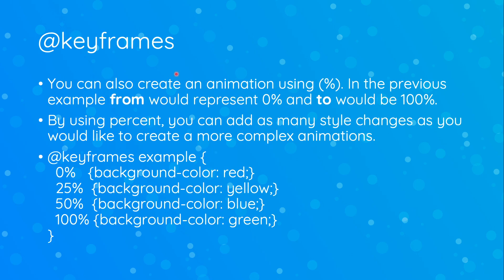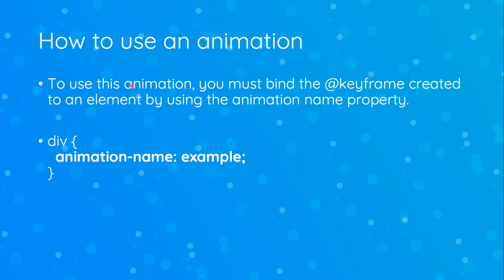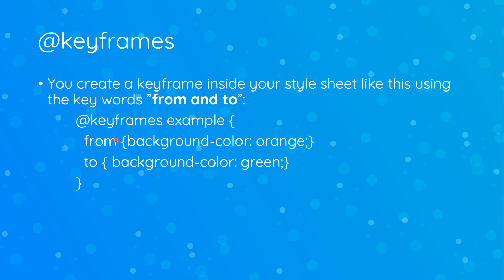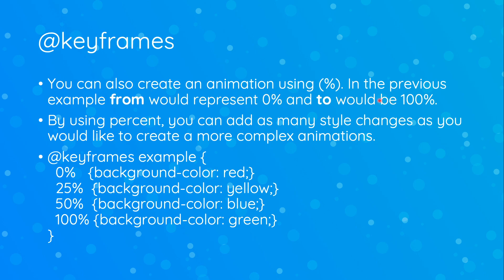There is also another way to create a keyframe, and that is by using percentages. In the previous example, 'from' and 'to' represent 0% and 100% respectively. The reason you'd use percentages instead is if you want to make a more complex animation. In this example, we're changing the background color four different times: at 0% red, at 25% yellow, at 50% blue, and at 100% green. Using percentages gives you more leeway to make more complex animations.